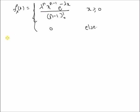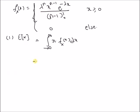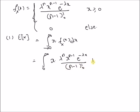Our first goal is to find the expectation of this random variable, that is E[X]. Expectation of X is equal to the integral from minus infinity to plus infinity of x · f(x) dx. Using the definition, since the function is only defined for positive values of x, the integral becomes from 0 to infinity of x · λⁿ · xⁿ⁻¹ · e^(−λx) / (n−1)! dx.